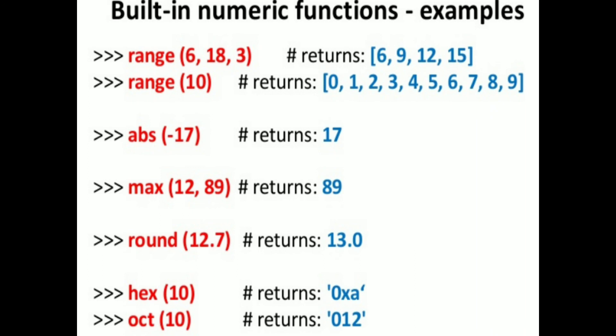range(10) returns 0 to 9. max(12, 18) returns 18. round(12.7) returns 13.0. hex gives the hexadecimal representation, oct gives the octal number. abs(-17) returns +17.